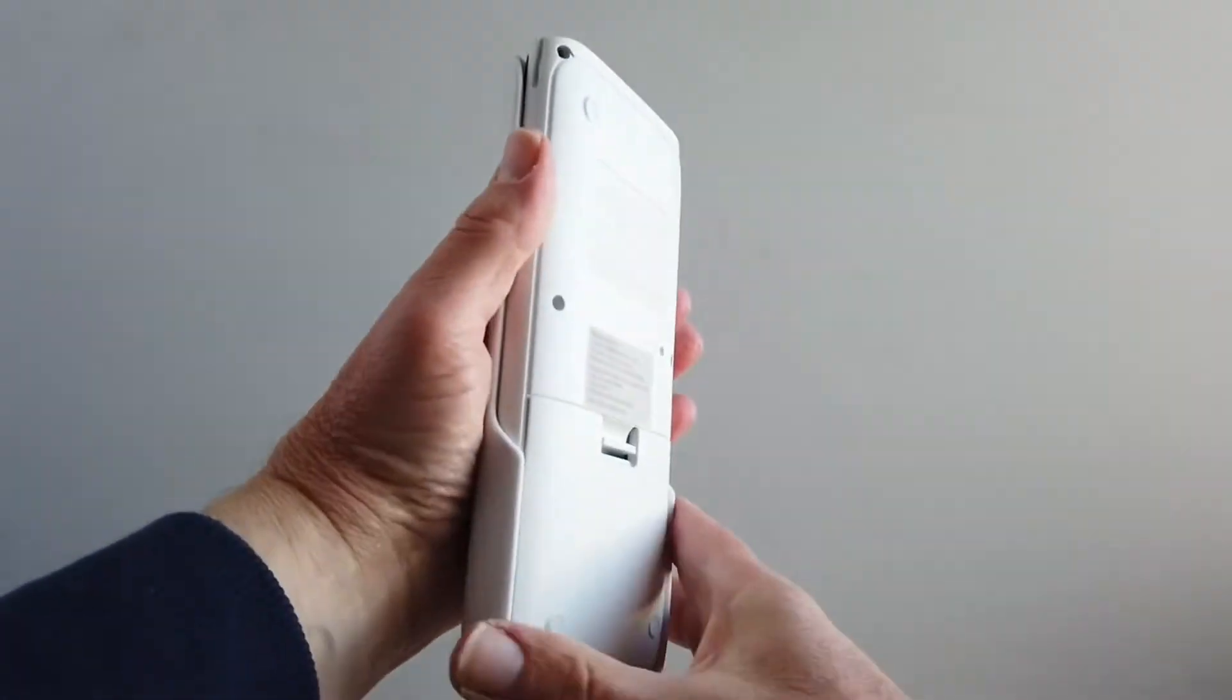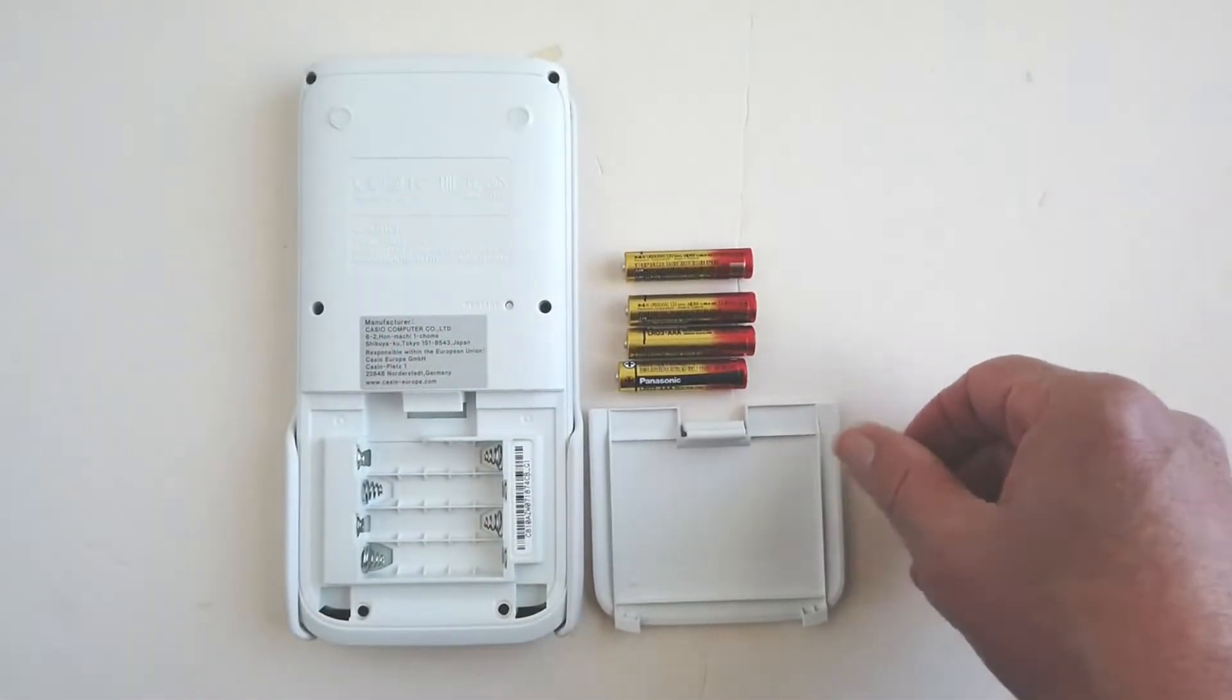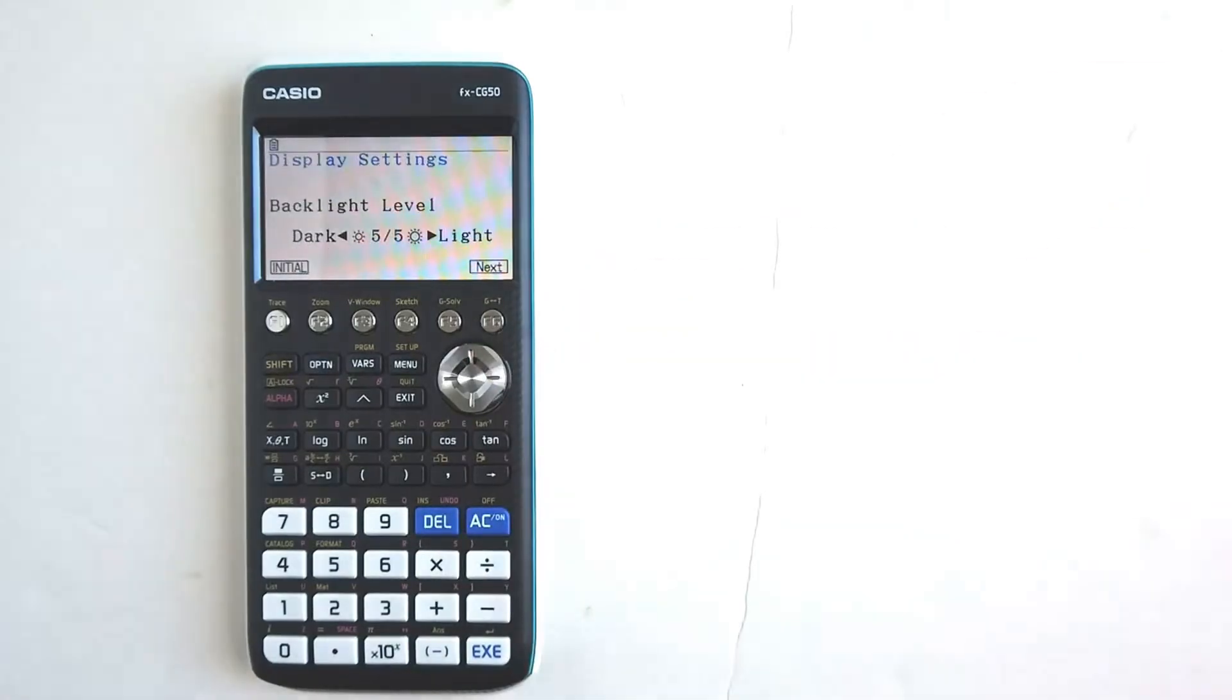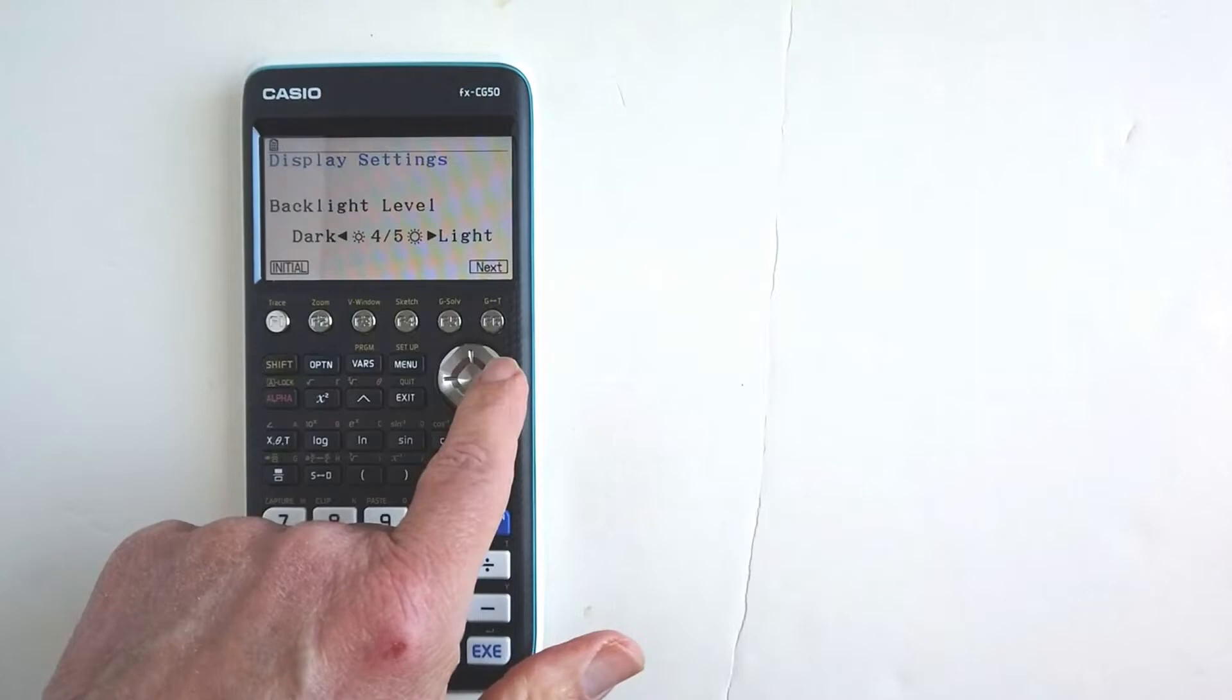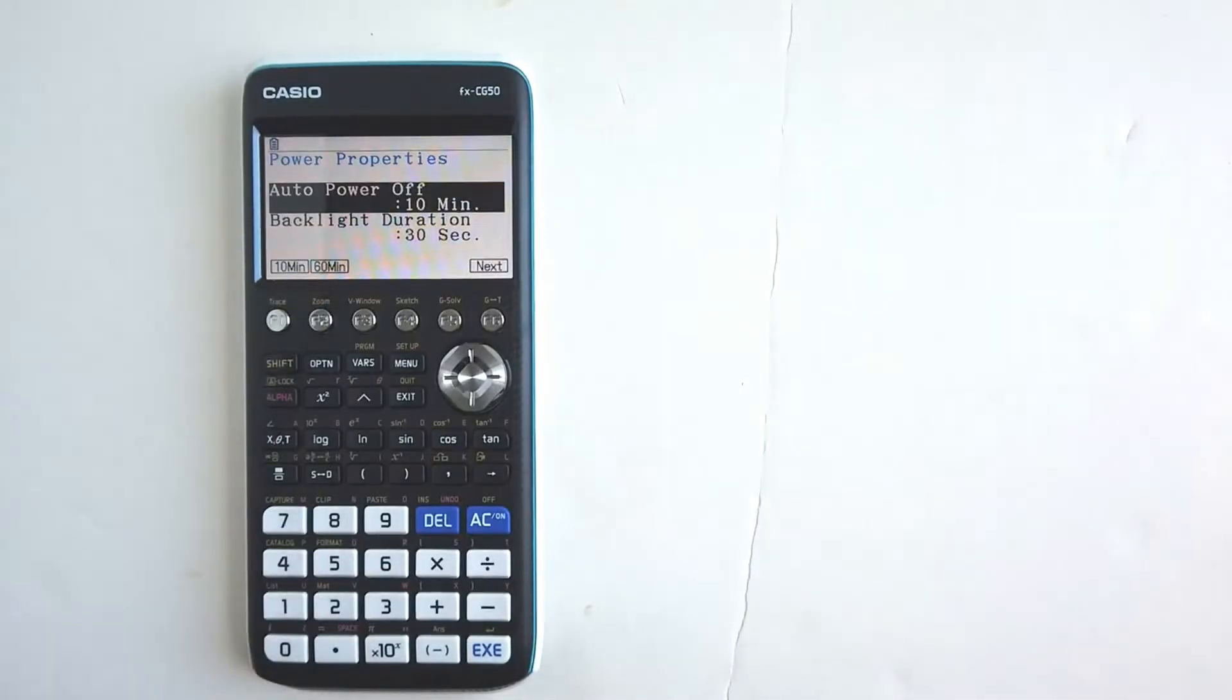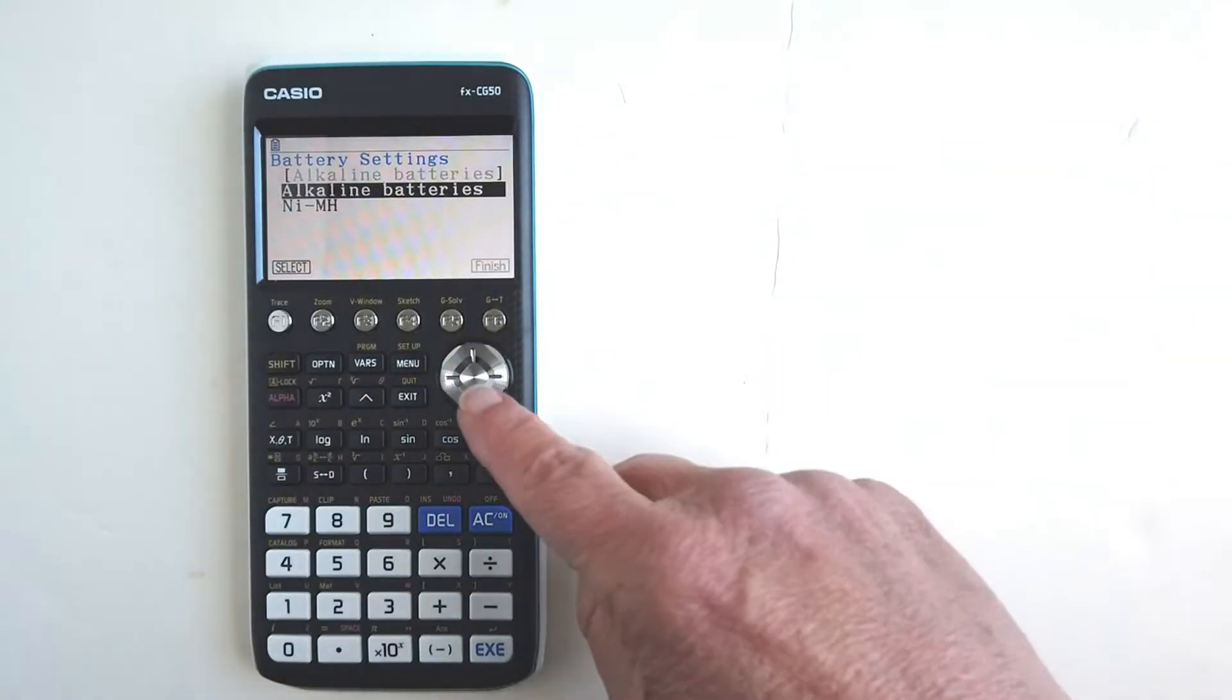The Casio FX-CG50 also excels at statistical functions, making it a solid choice for engineers who frequently work with data sets and need to perform regression analysis, probability calculations, or hypothesis testing. It's reliable for anyone in chemical or industrial engineering where data analysis and statistics are critical to success. Plus, its lightweight design makes it easy to carry around, whether you're working on-site or in class. When you're juggling different engineering courses or projects, having a calculator that can handle both 2D and 3D problems efficiently is a real time saver.